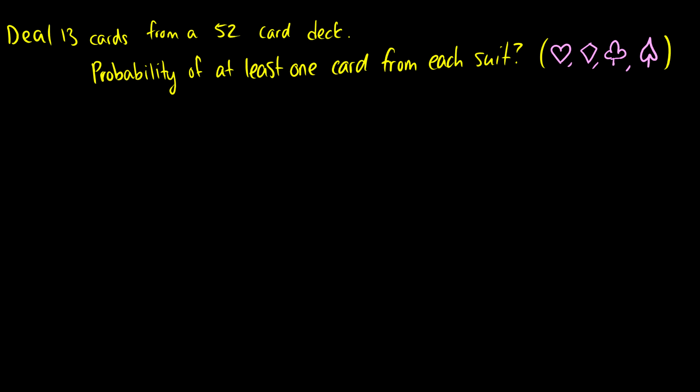We're going to deal 13 cards from a 52 card deck. And what is the probability of having at least one card from each suit? So that's one heart, one diamond, one club, and one spade. Okay well we're going to let C1 be the case where we have no diamonds. C2 is going to be the case where we have no hearts. C3 will do no clubs. And C4 will be where we have no spades.